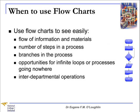So when would you use a flowchart? Flowcharts, sometimes also known as process maps, can be used in the following situations. First, they are excellent for identifying the flow of information and materials throughout a process. The number of steps in a process can be identified using a simple flowchart. Branches in the process can also be identified, and you can also watch out for opportunities for infinite loops or processes that go nowhere. If there are any interdepartmental operations, these can be identified using a basic flowchart. They can be used for showing up badly organised flows and help clarify improvement opportunities, and to highlight problem areas where no procedure exists to cope with a particular set of events.